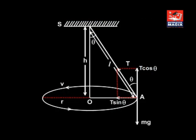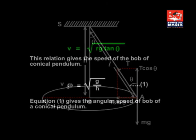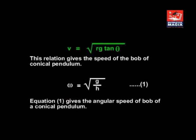Consider a bob of mass m revolving along a horizontal circle of radius r with velocity v. Let θ be the semi-vertical angle of cone. v = √(rg tan θ).